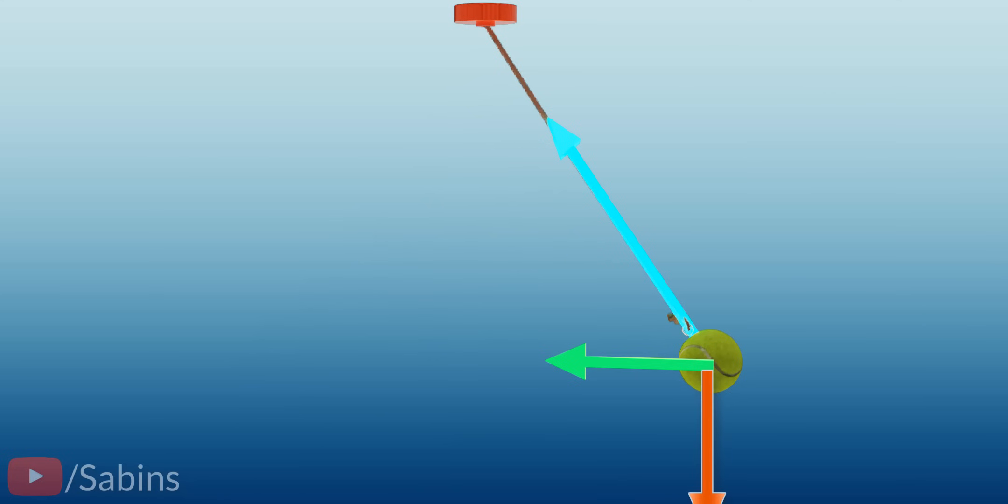However, the weight of the ball does not increase, which means that in order to keep the vertical component of the tension the same, the angle has to increase, like this. This is the reason why the ball moves away as you rotate it faster.